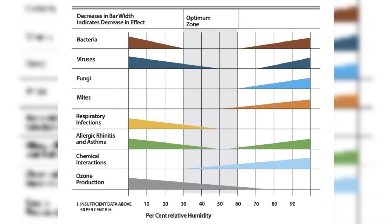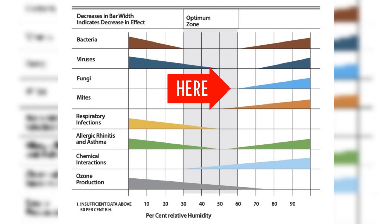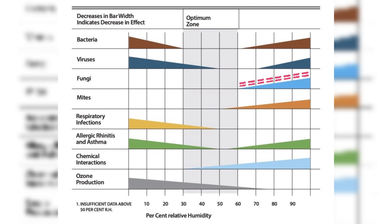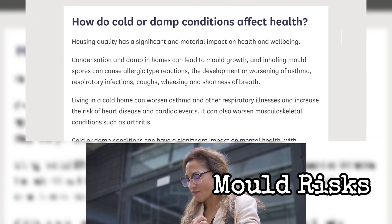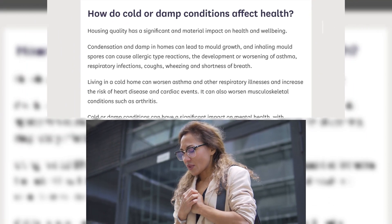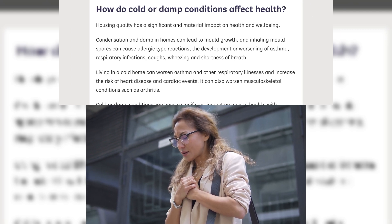This graph tells us where the optimum zone or sweet spot is where we should be aiming to have our relative humidity in our homes. But it's this area here I want to focus on — when relative humidity levels start increasing above the 70% mark, the risk of fungi and mold growth becomes ever more present. Inhaling mold spores can cause allergic reactions, worsening of asthma, respiratory infections, coughs, wheezing, and shortness of breath.